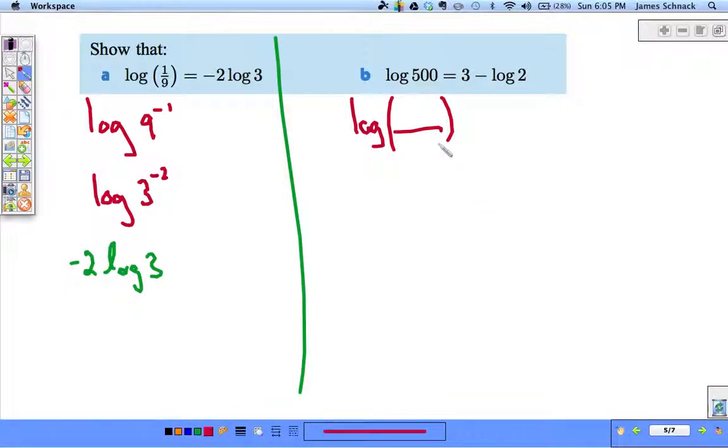Minus log 2. So, if I'm simplifying this quotient, log of the top, minus log of the bottom. Well, let's put a 2 down there. Now, what divided by 2 is 500? 1,000.